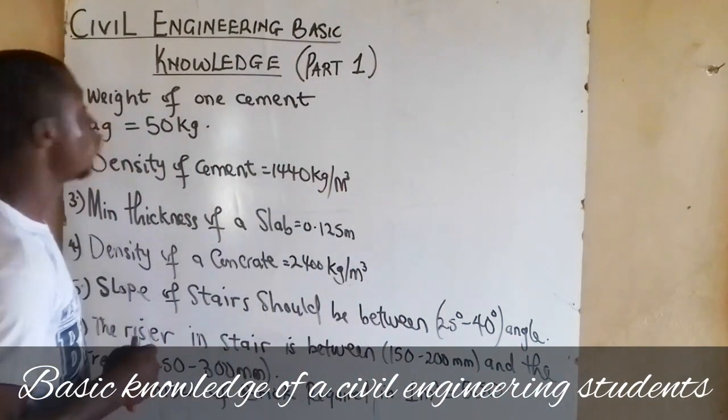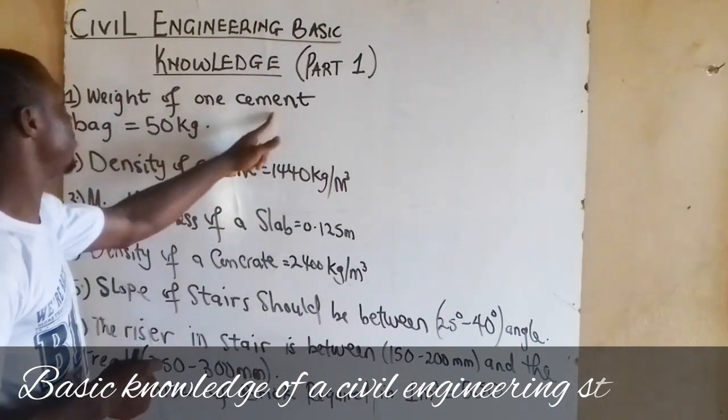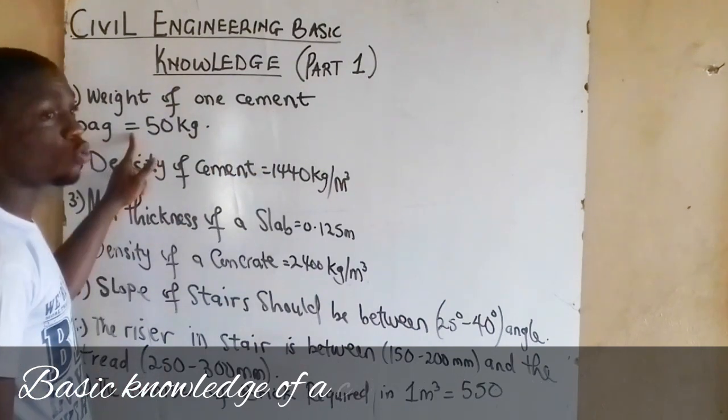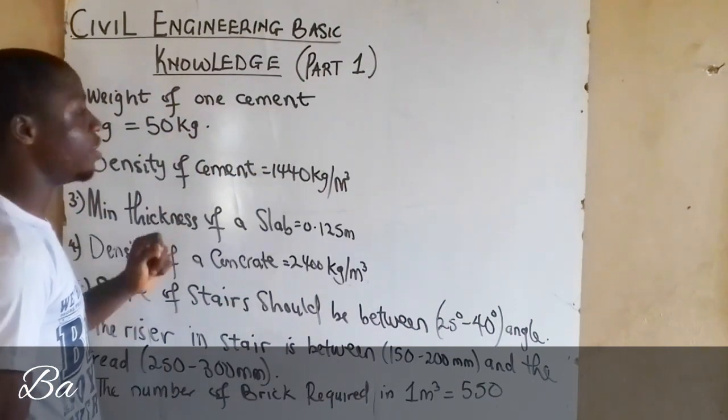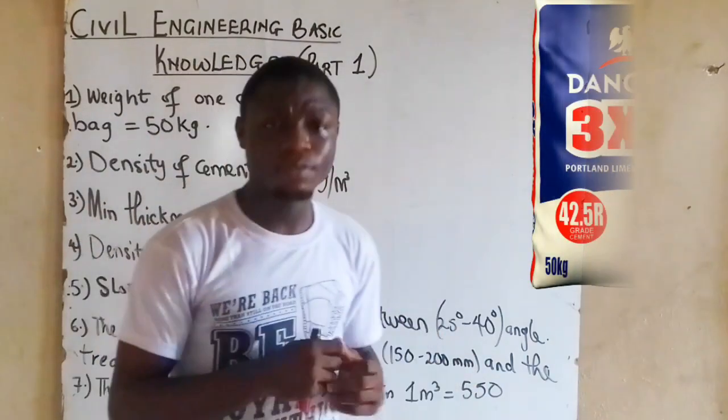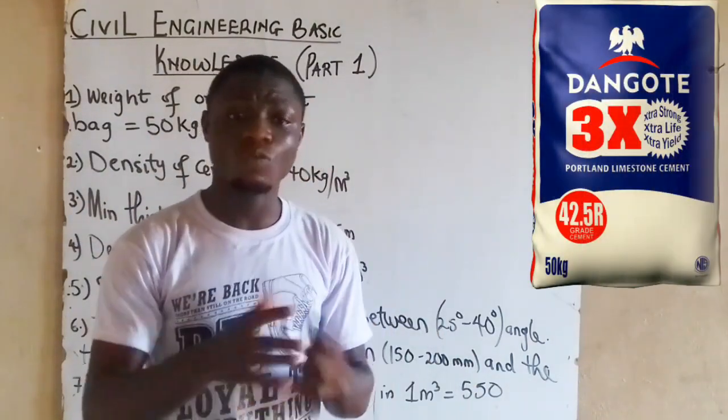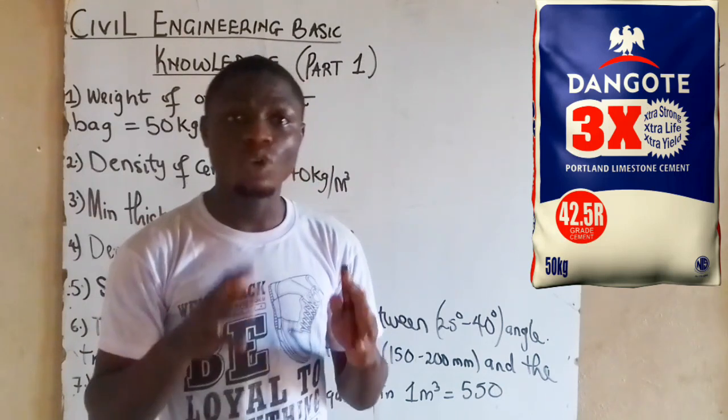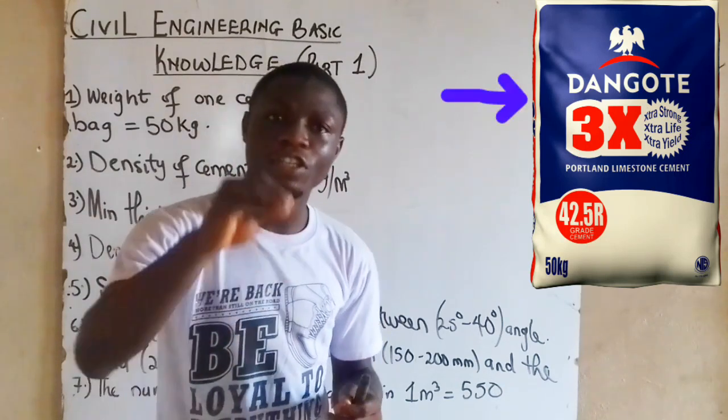Number one, weight of one cement bag is equal to 50 kg. As an engineering student, you need to know that one bag of cement weighs 50 kg.